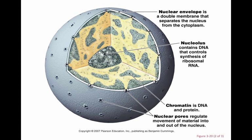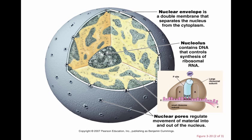It has this double membrane. Inside of the nucleus is a nucleolus for ribosomal RNA synthesis. This is the nucleolus again, and this is a pictorial diagram of the ribosomal subunits that are synthesized in the nucleolus. They are made of a large ribosomal subunit and a small ribosomal subunit — made here in the nucleolus.